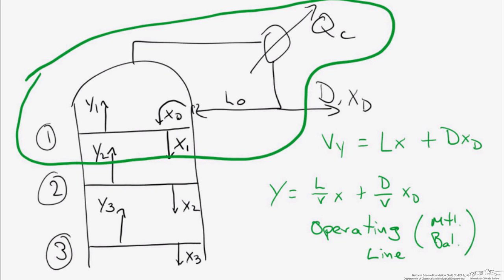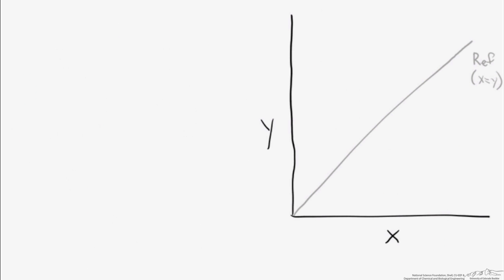So this is what's going on between stages. On stages, we have vapor-liquid equilibrium; between stages, we need to satisfy these material balances. So let's look at how all this goes together in an x-y diagram. When we start out with an x-y diagram, we typically start with a reference line — that's just y equals x. Then to that, let's add our vapor-liquid equilibrium data. That data can come from tabulated data or from activity coefficients. Here we're just going to put up a generalized curve that looks something like what we might expect for VLE.